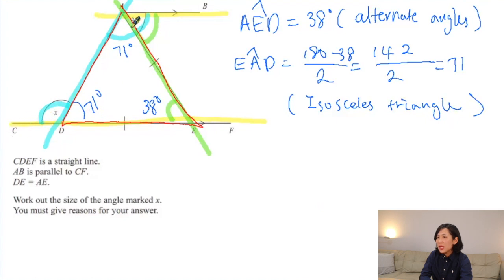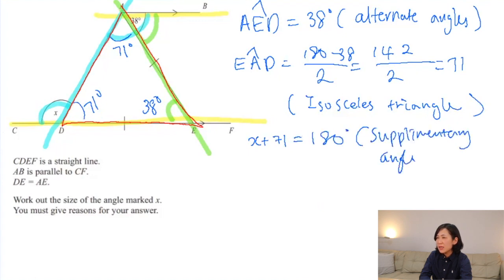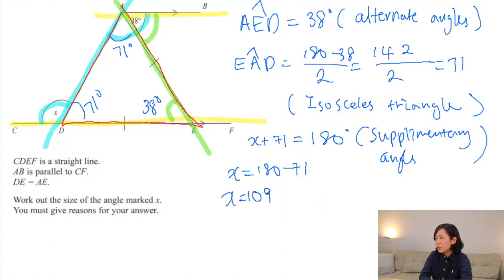Now we need to find x. We can see the supplementary angle: x plus 71 equals 180, so x equals 180 take away 71, which gives 109. You can also notice that angle DAB is an alternate angle for x, so 71 plus 38 gives the same result. Try to find your own way.